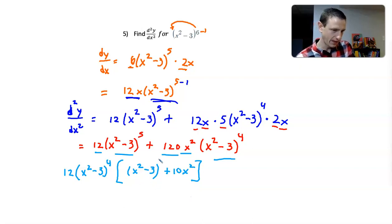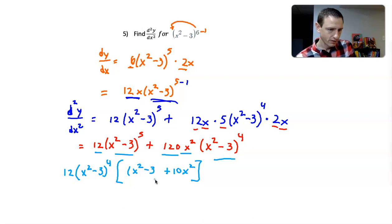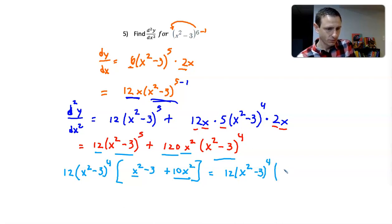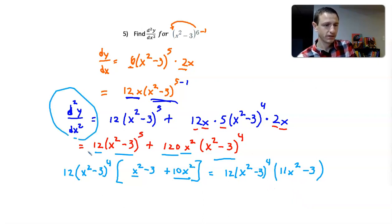We actually do have some like terms. I didn't need the parentheses since it was just raised to the 1st. So x squared plus 10x squared is 11x squared minus 3. Let's write this as 12 times x squared minus 3 to the 4th times 11x squared minus 3. And that is the second derivative.